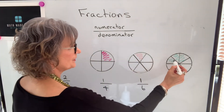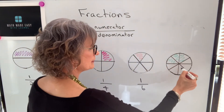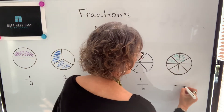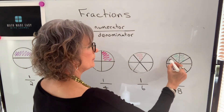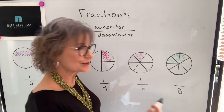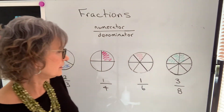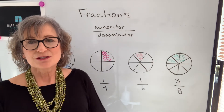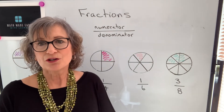In this last example, you can count up the number of equal parts, and it is eight — so that's our denominator. We've colored three of those, so that means you've eaten three eighths of the pie. So that's what a fraction is — it's part of a whole.